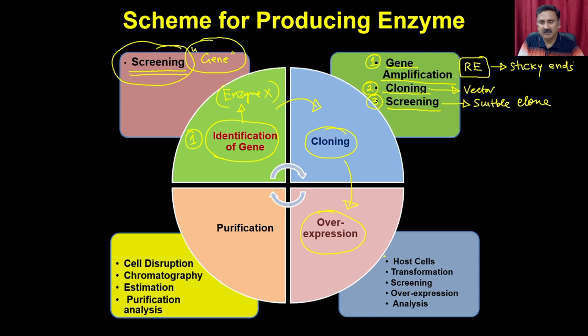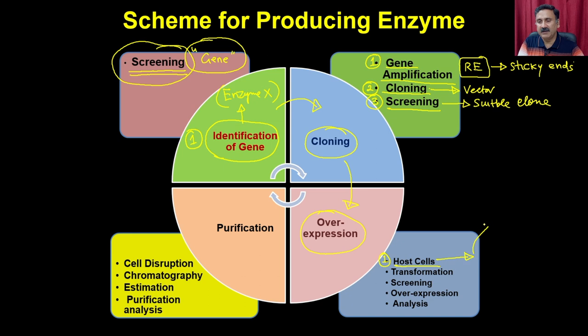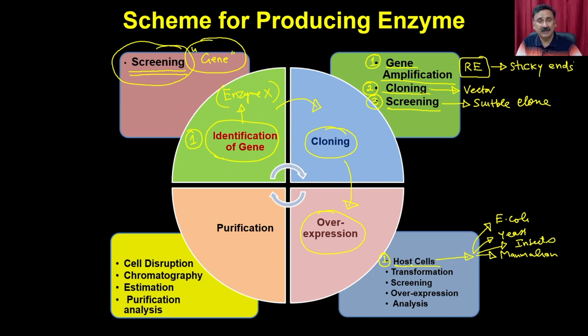In overexpression, the first step is to choose the host cells — the cells where you are going to make the proteins. It could be as simple as bacteria or E. coli, or as complicated as mammalian cells. Depending on the host, it can be yeast, insects, and others. Choosing the host cell is very crucial because it is going to decide the final production.